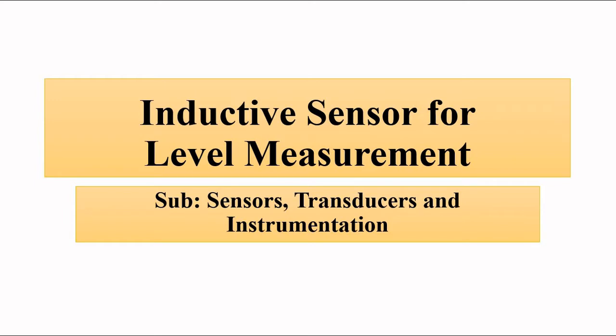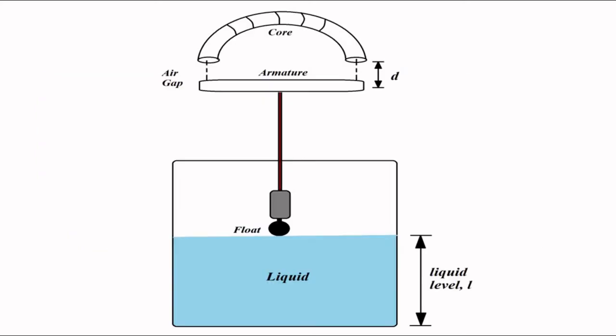The inductive method of measurement of liquid level involves using a basic inductive transducer where one part of the sensor — the movable part — is connected to a float system placed on the liquid. Whenever there is a change in the liquid level, this movable part moves up and down, and that leads to a change in inductance.